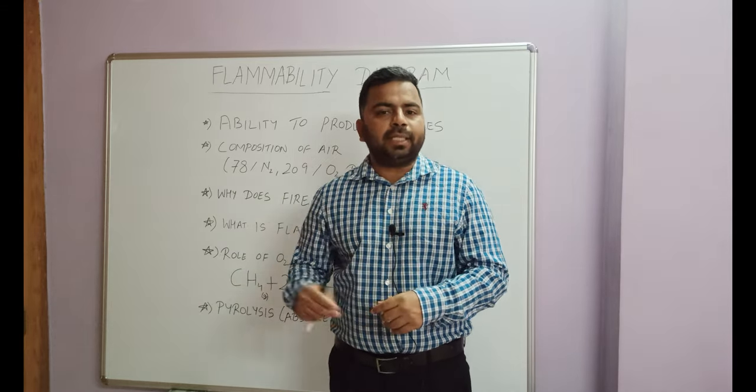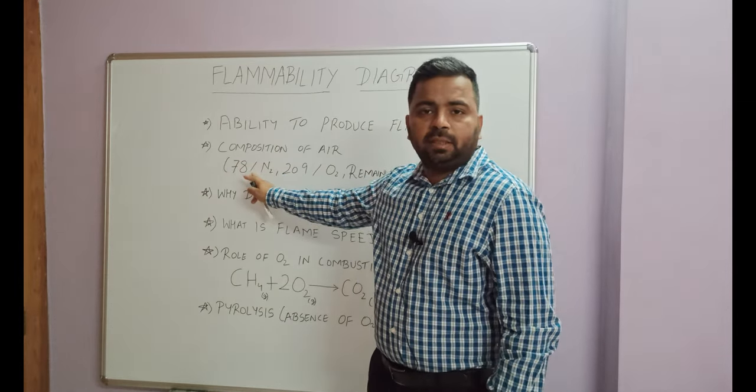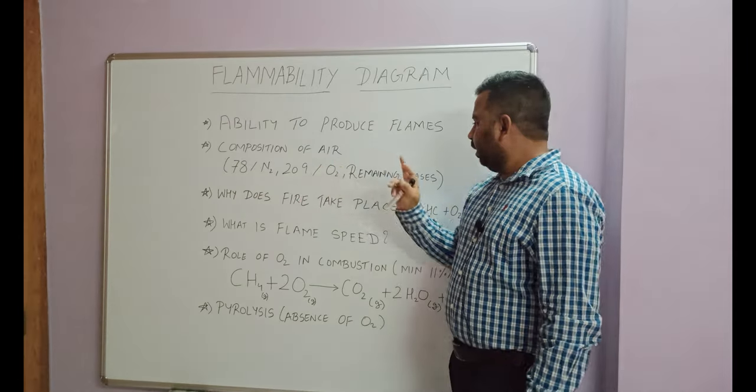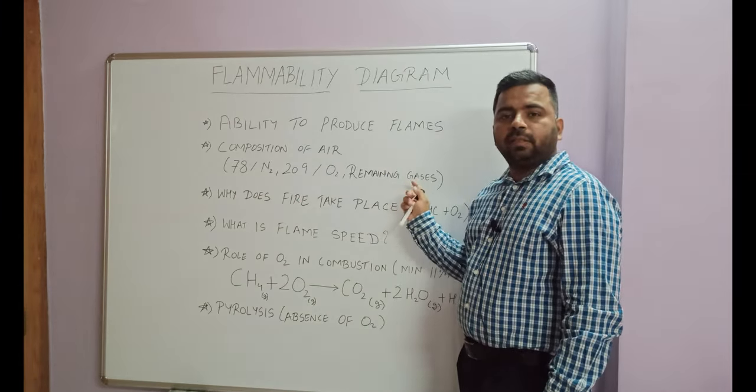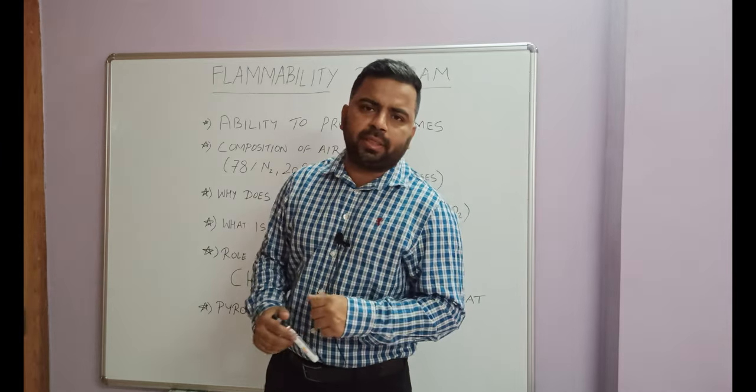Composition of air: the biggest element is nitrogen at 78%, oxygen is 20.9%, and remaining are other gases which consist of inert gas, carbon dioxide, carbon monoxide, etc.